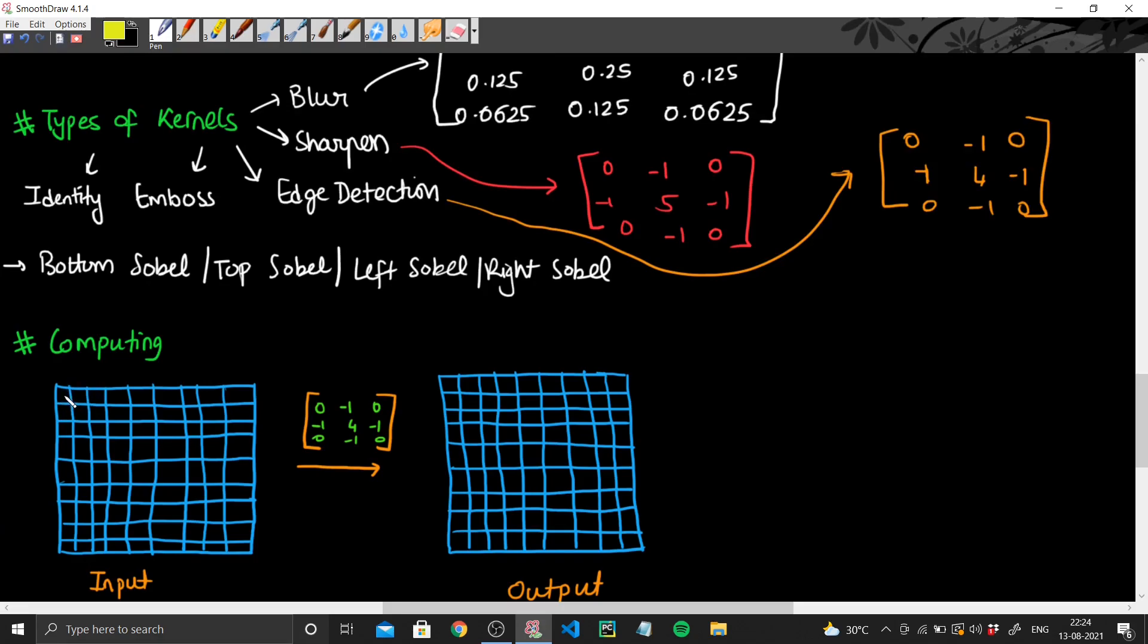Now let us fill the pixel values, intensity values of the pixels. So let's say I'll just use arbitrary values. This is say 6, this is 7, this is 8, this is 20, this is 10, this is 5, this is 4, this is say 2, and let's say this is 9.